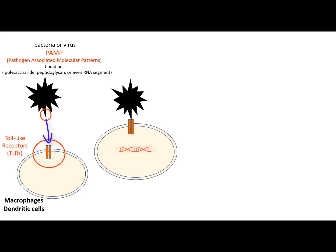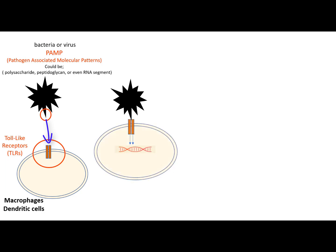Once the PAMP molecule comes into direct contact with the toll-like receptor, it activates it. This activation of toll-like receptors results in a cascade of intracellular reactions which end with the production of various numbers of immunological and inflammatory mediators.